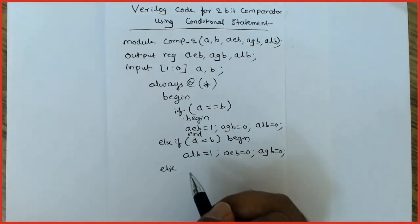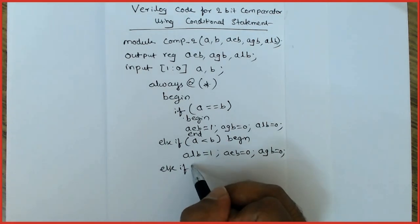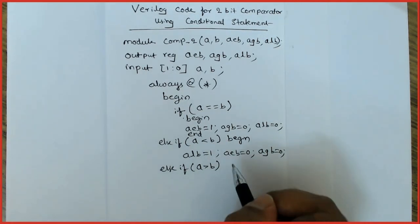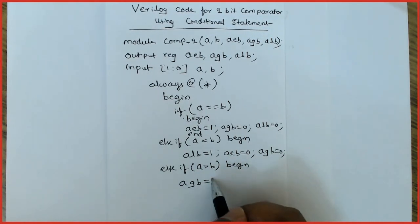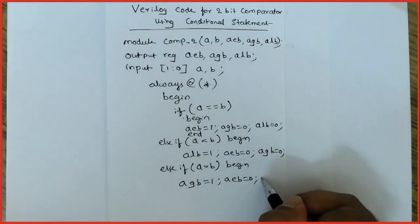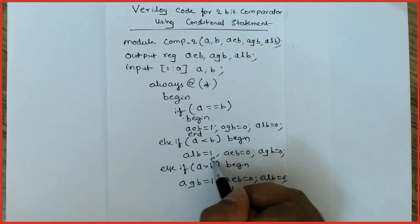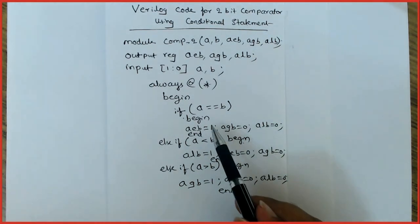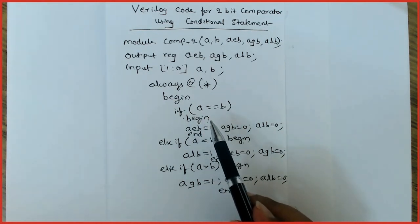Else—you can directly write else and finish the program, or you can mention the condition for clarity. If a greater than b, begin: agb is 1, aeb is 0, and alb is 0. I have used begin, so I need to end it. Make sure that whenever you use begin at the start of the if statement, complete it or end it with the keyword end.